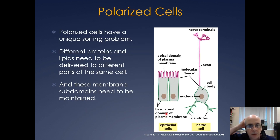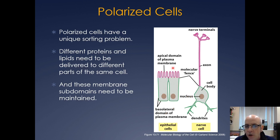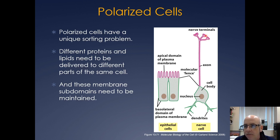Now on to polarized cells. Polarized cells have a unique sorting problem because they have different domains on the plasma membrane. We've already seen this with epithelial cells, where you have an apical surface and a basolateral surface separated by tight junctions. But also in nerve cells, you'll have the axon and the nerve termini, as well as the cell body and the dendrites. Certain neurotransmitter receptors will need to be guided to the dendrites, whereas you want basically vesicles that have neurotransmitter — not the neurotransmitter receptors — in the nerve termini. This is a complex sorting problem in these polarized cells.